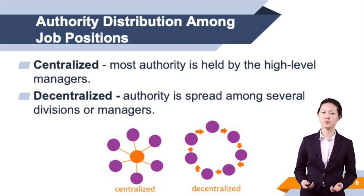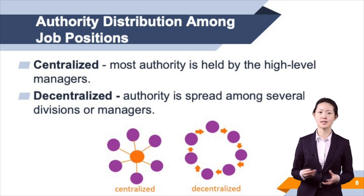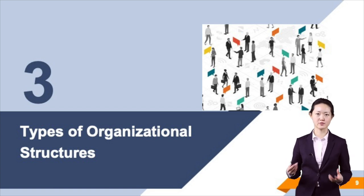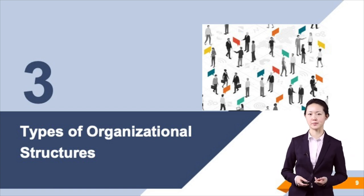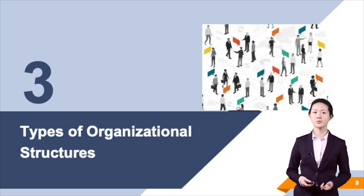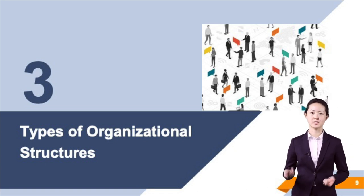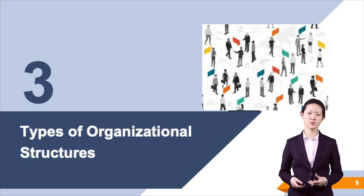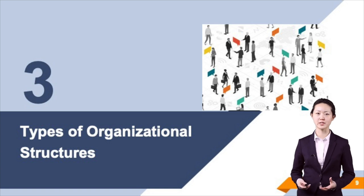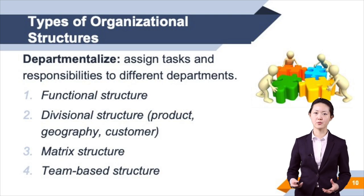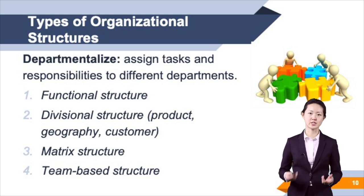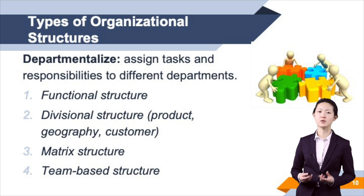Once the different jobs, assignments, tasks, and responsibilities are identified, it is important to departmentalize them. Departmentalization refers to the process of assigning tasks and responsibilities to different departments — grouping together activities and employees who share a common supervisor and resources, who are jointly responsible for performance, and who tend to collaborate with each other. There are four main types of organization structure: functional, divisional, matrix, and team-based.